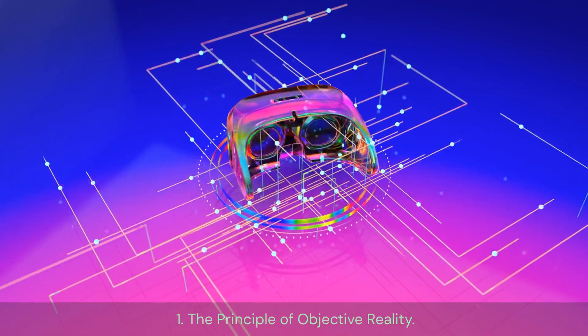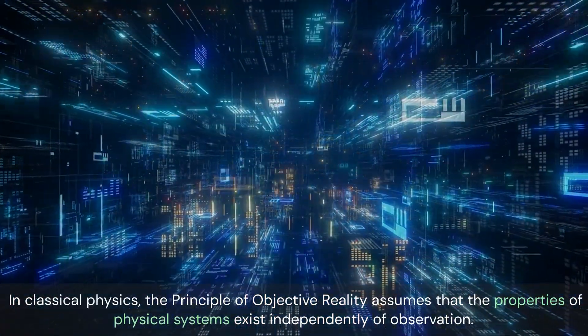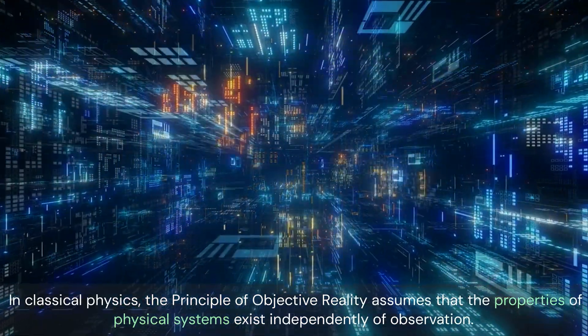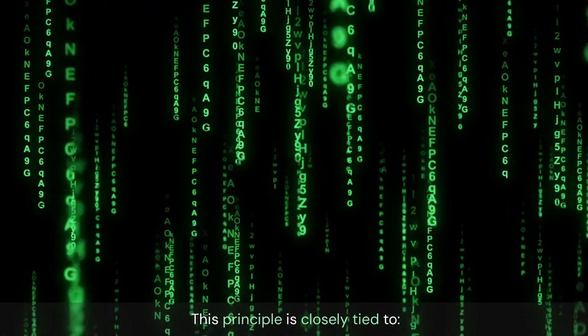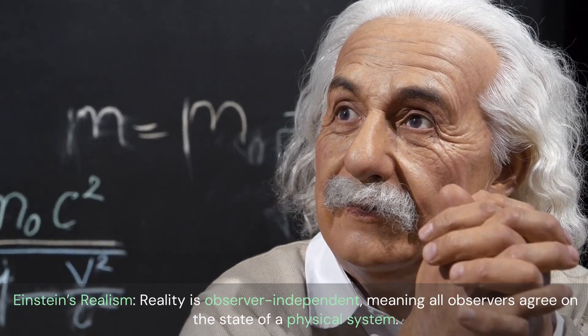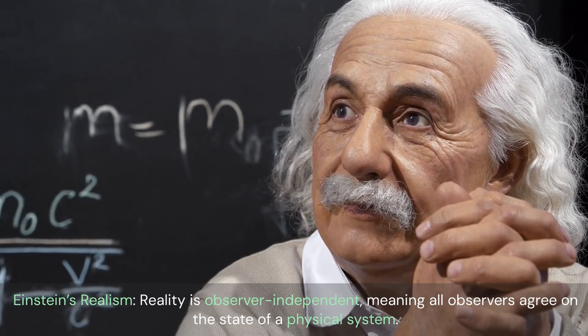The principle of objective reality. In classical physics, the principle of objective reality assumes that the properties of physical systems exist independently of observation. This principle is closely tied to Einstein's realism. Reality is observer-independent, meaning all observers agree on the state of a physical system.